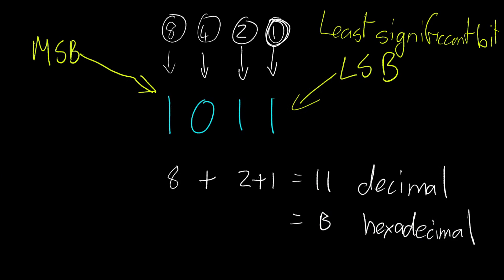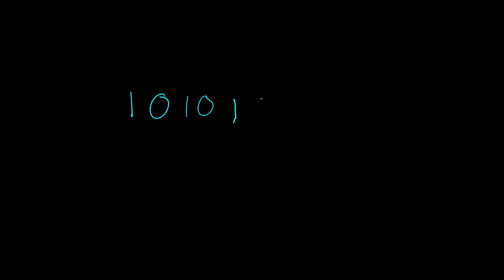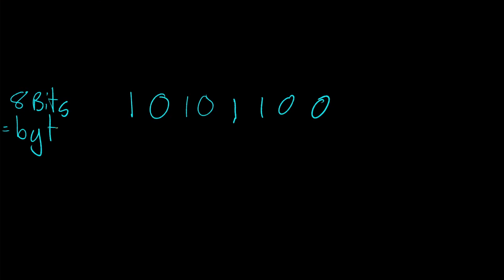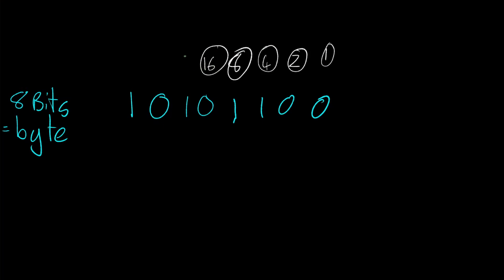Now I'm going to expand on that with a bigger number — eight bits: one, zero, one, zero, one, one, zero, zero. Whenever you're talking about eight bits, that equals a byte — so we have one byte of data here. The place values from right to left are one, two, four, eight, sixteen, thirty-two, sixty-four, one-twenty-eight.